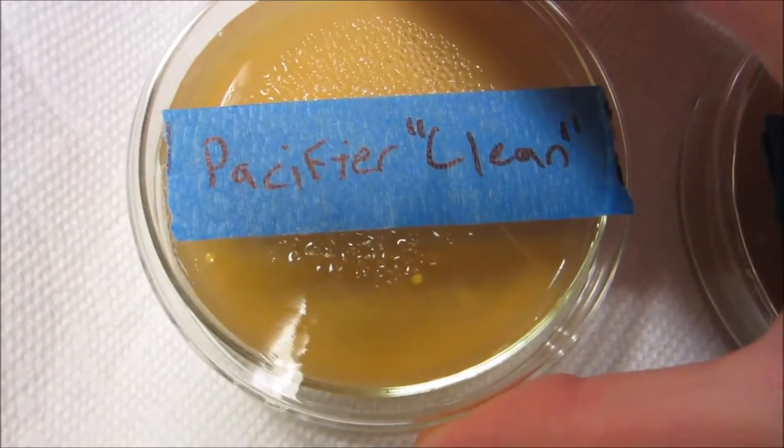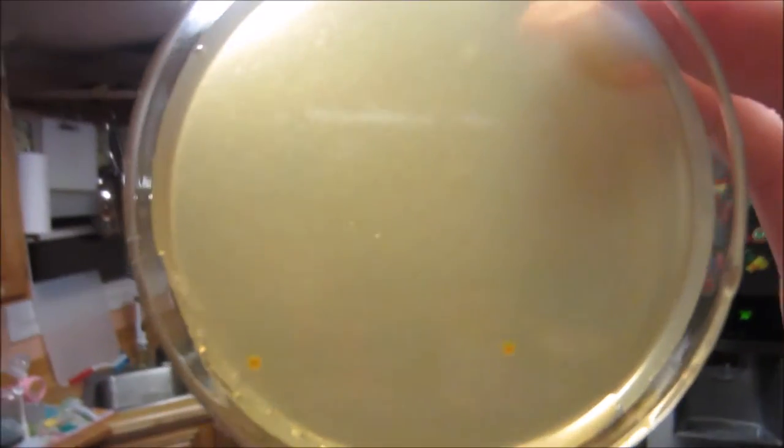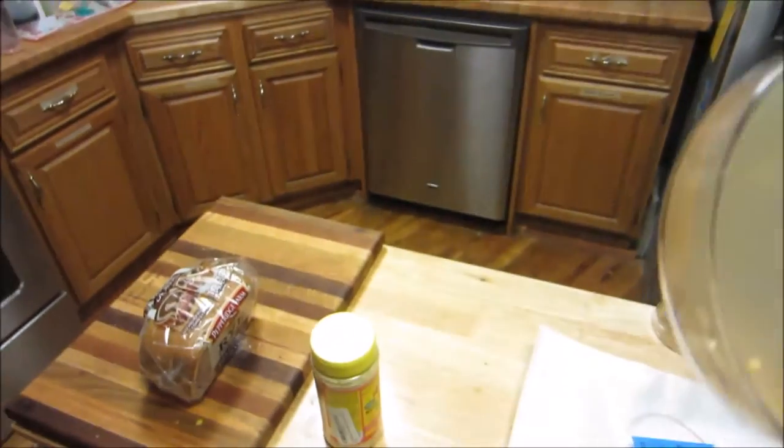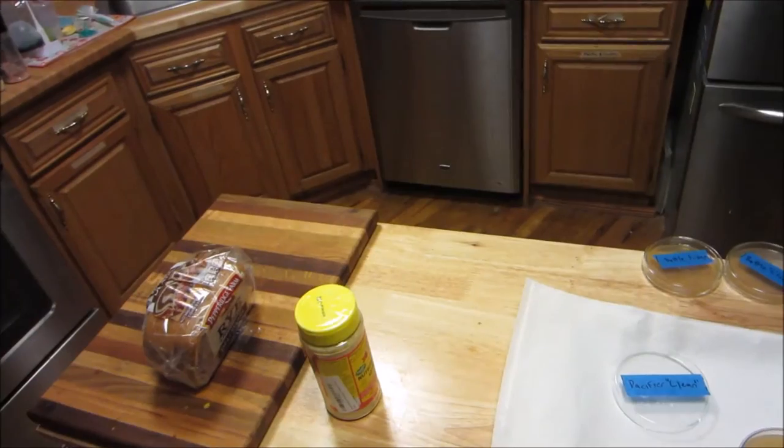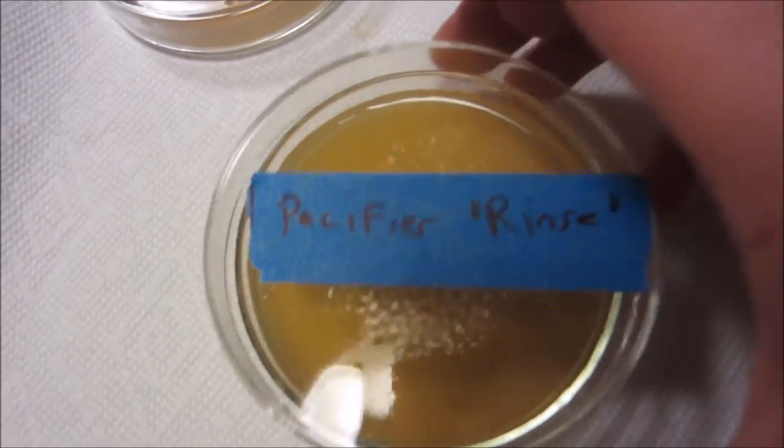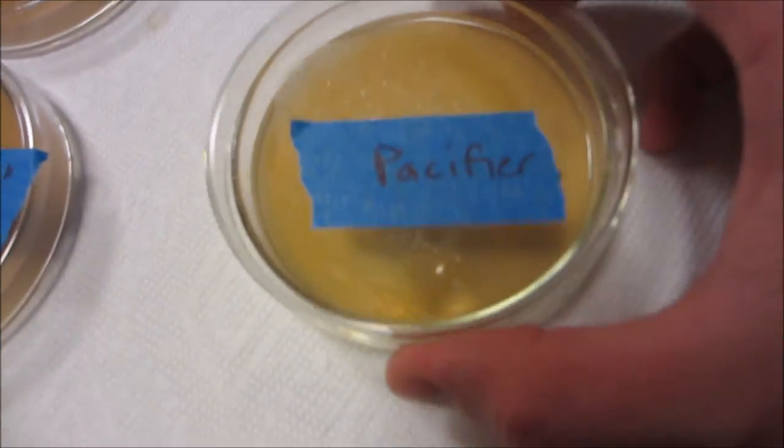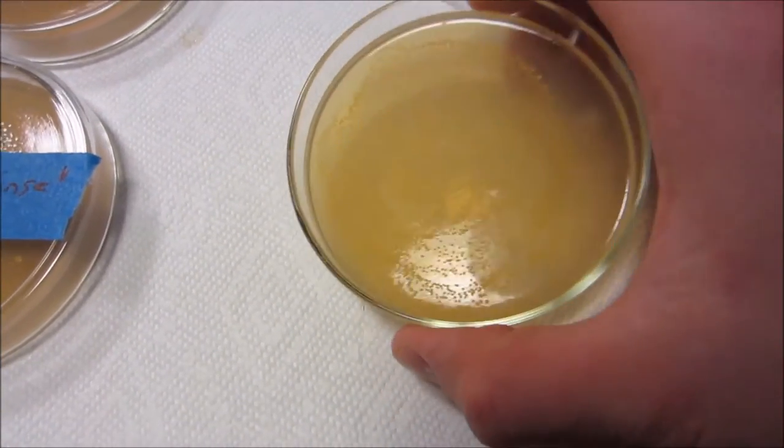On the clean pacifier, you can see that there's actually a couple, so even with soap and water, it wasn't quite enough to clean it entirely. Next is a rinsed pacifier, which you can see has a lot of growth on it. And finally, I have a used pacifier, straight from the baby's mouth. You can see there is a huge amount of growth on it.